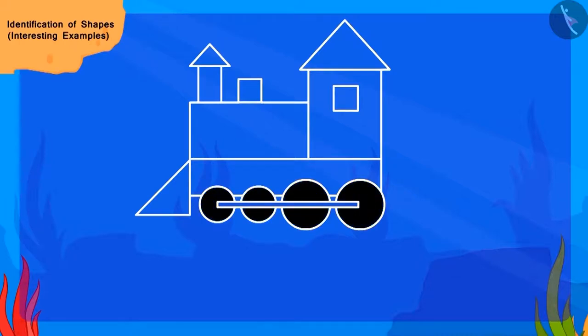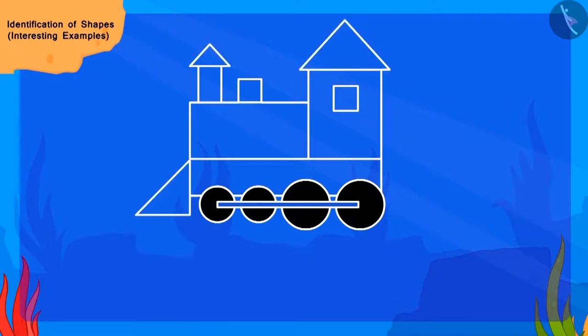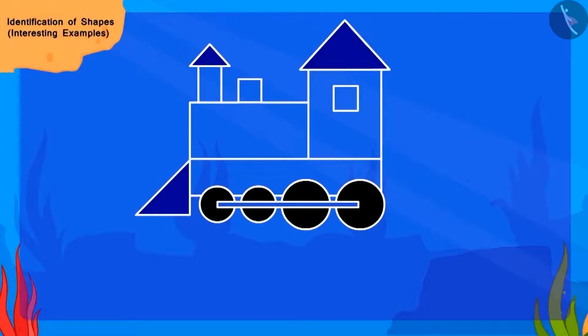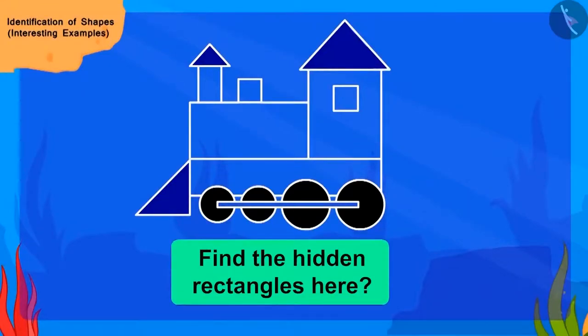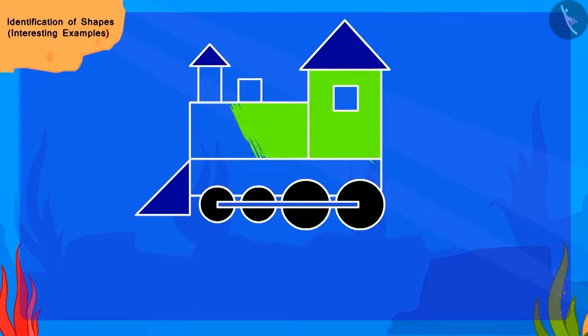Now, can you find the hidden triangles here? Come, let us color them with blue color. Now, can you find the hidden rectangles in the picture and fill them with green color?